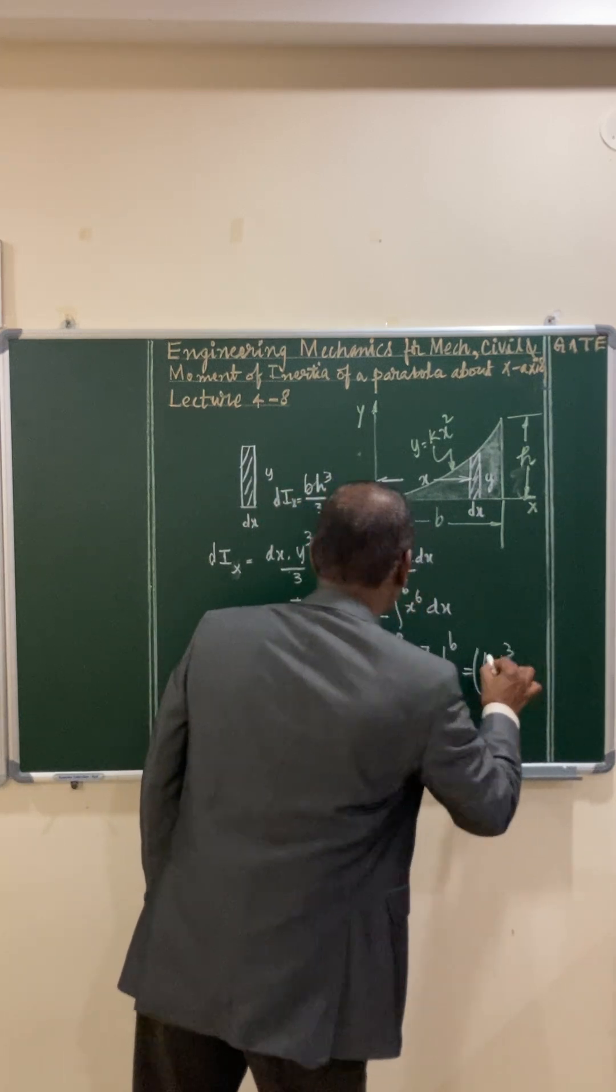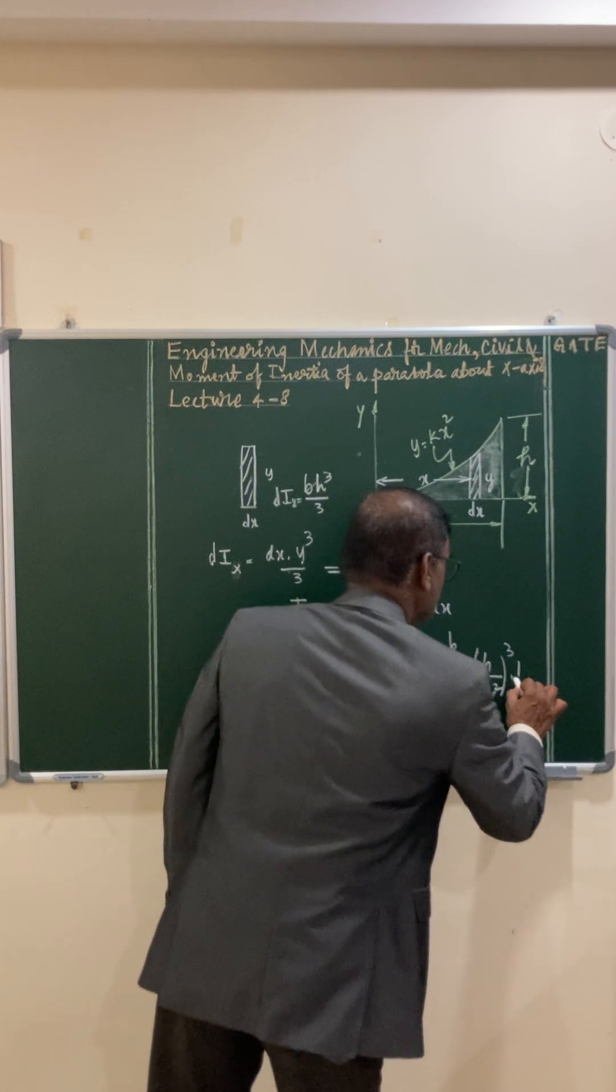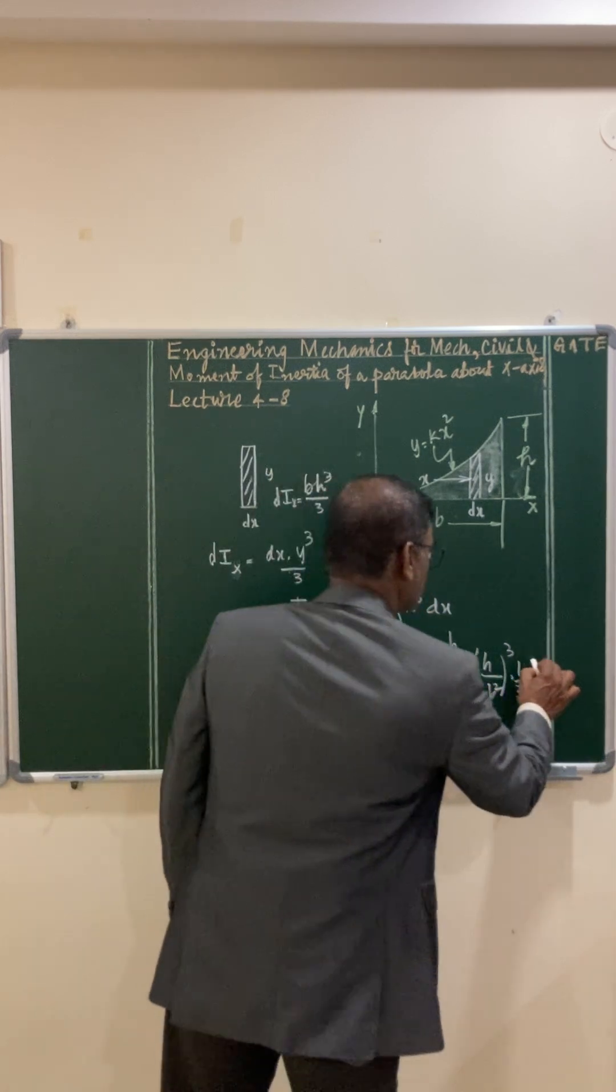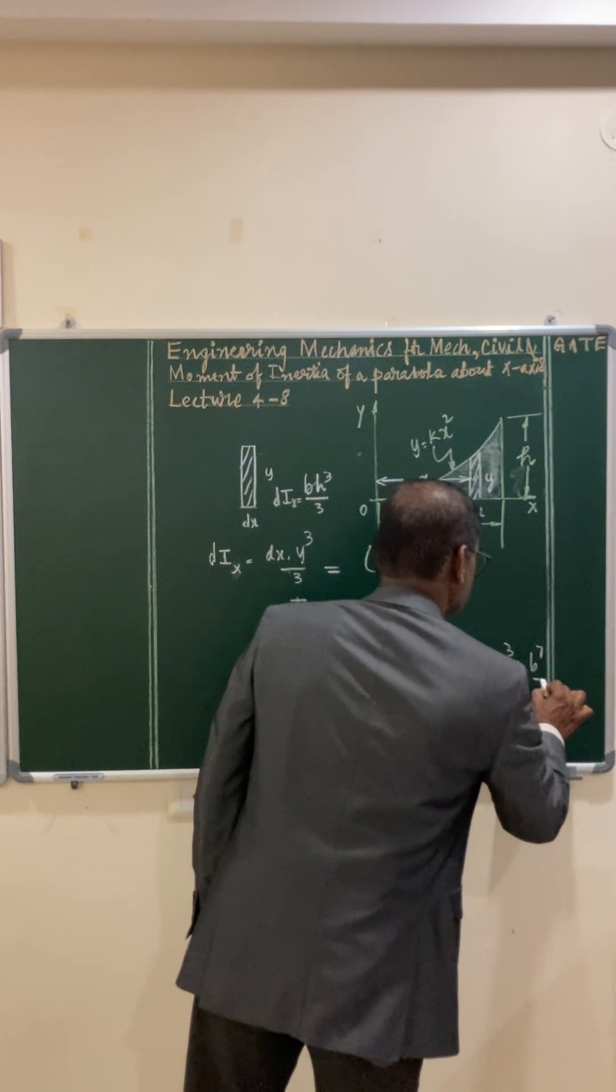This is cubed, that is k³/3 into, here the limits of x to the power b, b⁷/7.